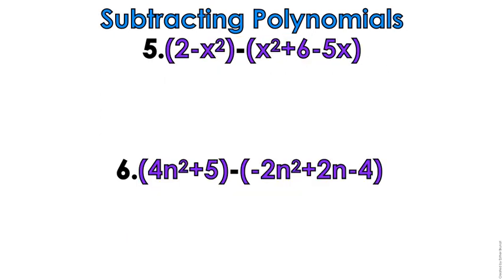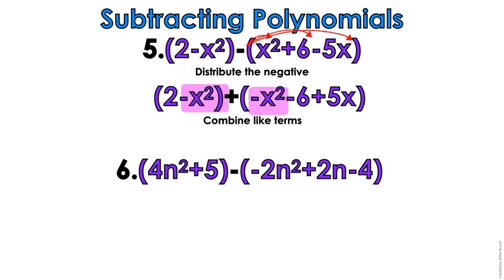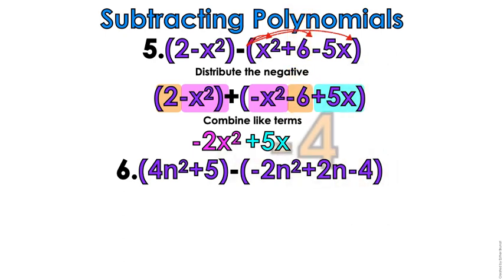Let's move into subtraction. Subtraction adds one more step at the front — you've got to distribute that negative and change the signs. All pluses become minuses, all minuses become pluses, and then you do the same thing as the first four examples: combine your like terms, look at things with the same last name. x-squared plus x-squared: negative 1 plus negative 1 gives me negative 2. Then 5x comes down alone. Constants 2 and negative 6 give negative 4.